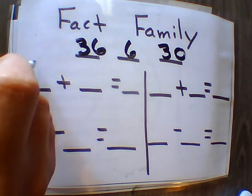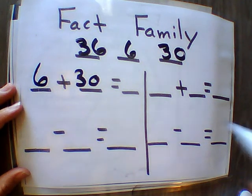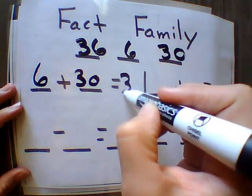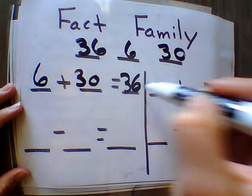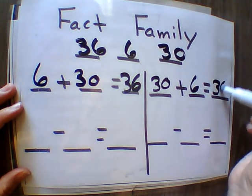All right. So we're taking our two smaller numbers, our part numbers, 6 and 30. Put those together. Add them together to get to 36. Then we're taking reversal. 30 goes first. 30 plus 6 equals 36.